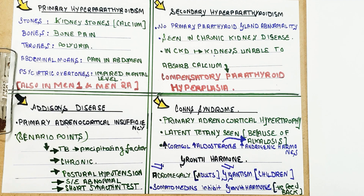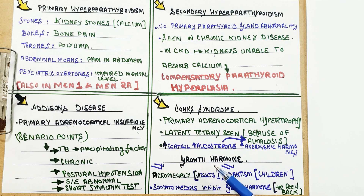For growth hormone MCQs: acromegaly occurs in adults whereas gigantism occurs in children. Somatomedins are the working mediators for growth hormone, and when somatomedins are produced in larger amounts, they have an inhibitory feedback effect on growth hormone, suppressing it.